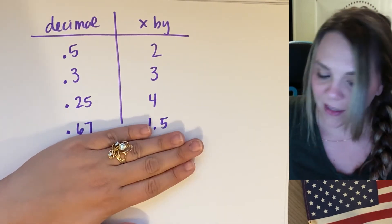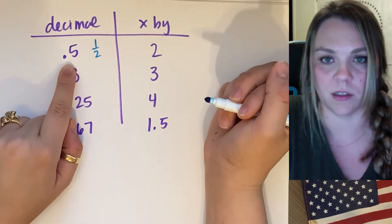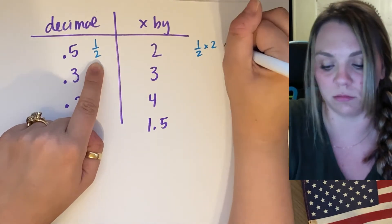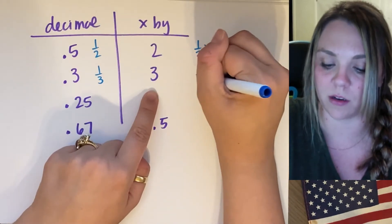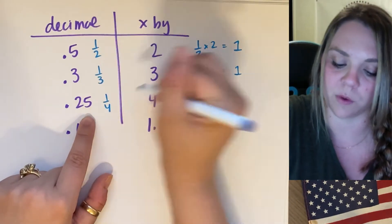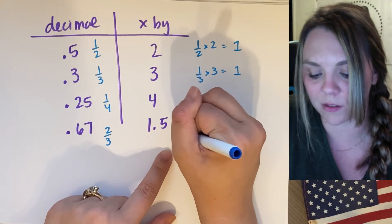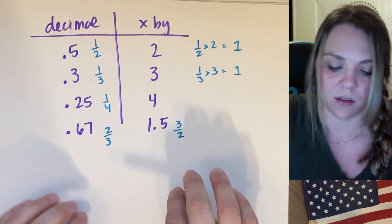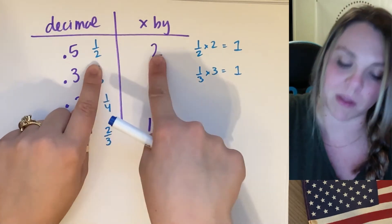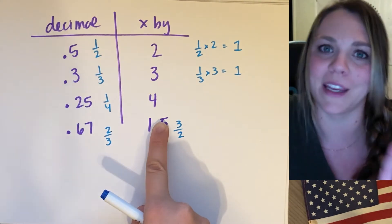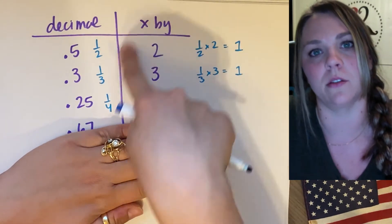If you want to know why: 0.5 as a fraction is 1/2, so 1.5 times 2 gives a whole number. 0.3 is 1/3, so 1.3 times 3 gives 1. 0.25 is 1/4, so 1.25 times 4 gives 1. And 0.67 is 2/3, which is why we multiply by 3/2 or 1.5. If fractions aren't your thing, just memorize: 0.5 → multiply by 2, 0.3 → multiply by 3, 0.25 → multiply by 4.